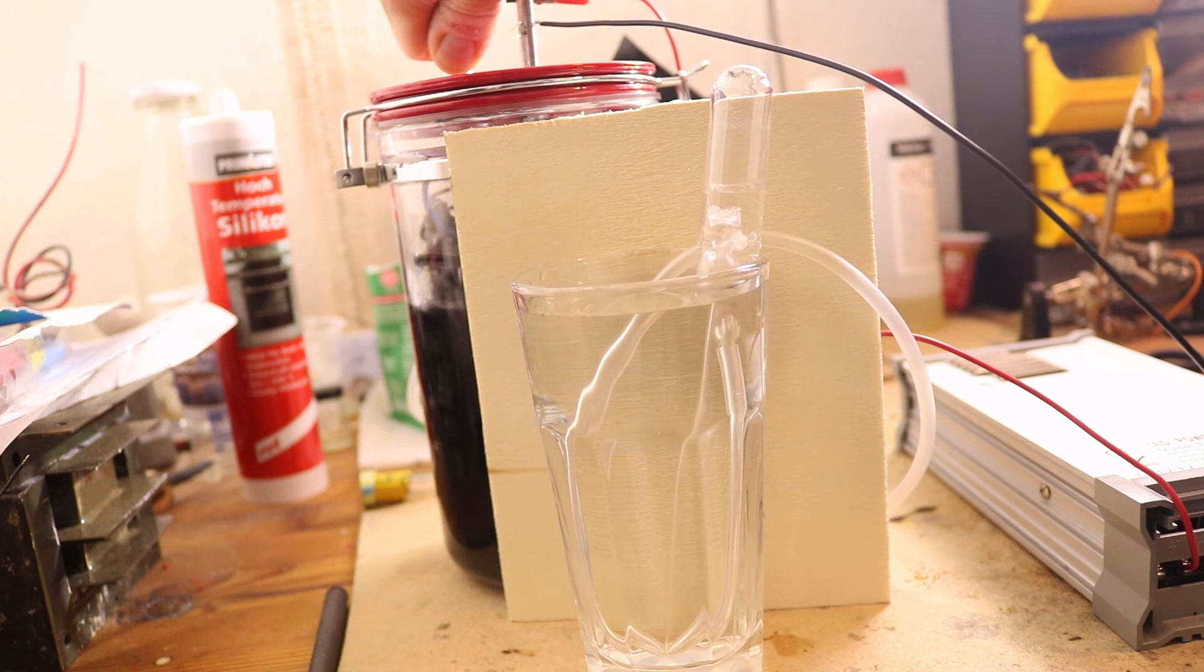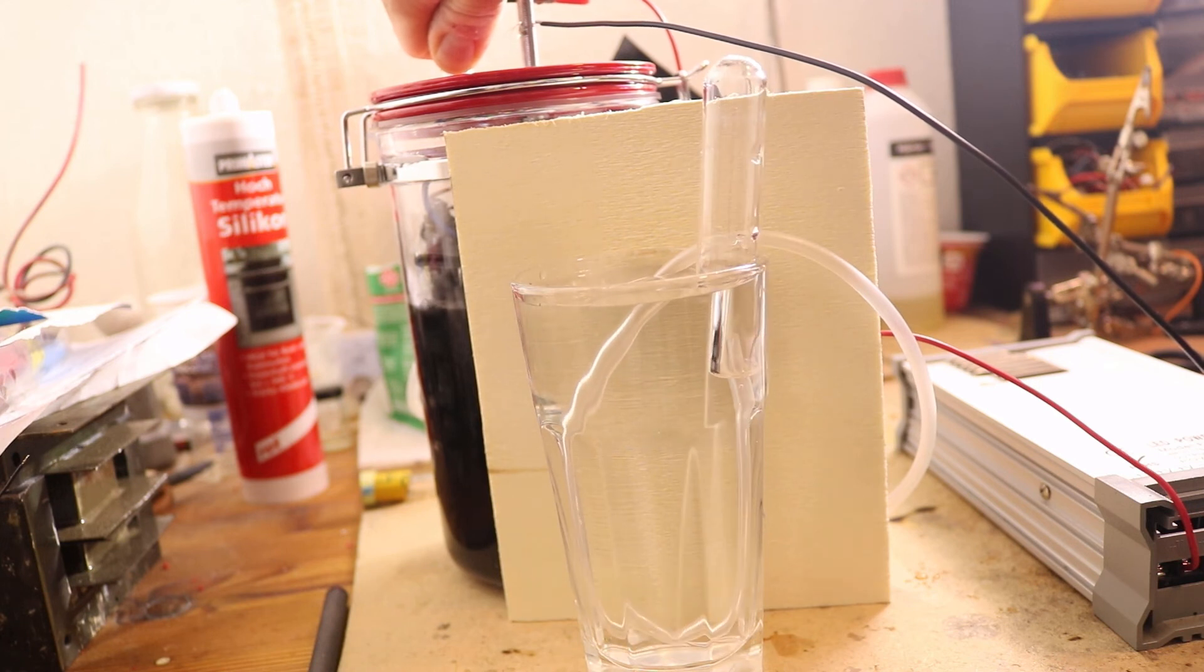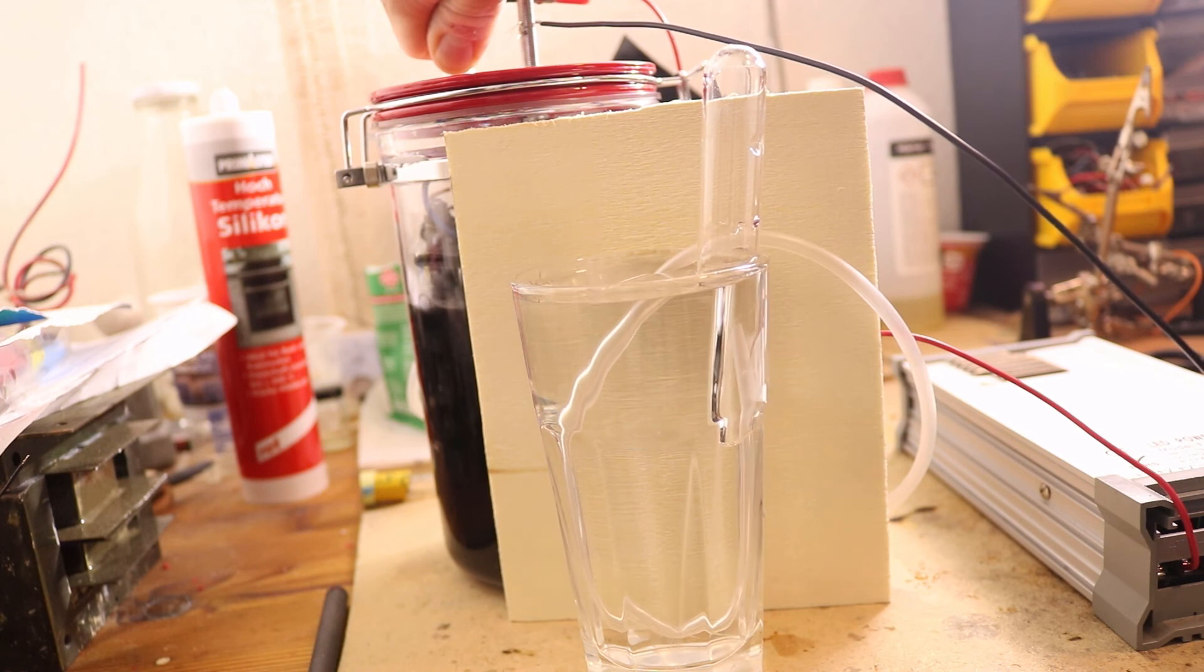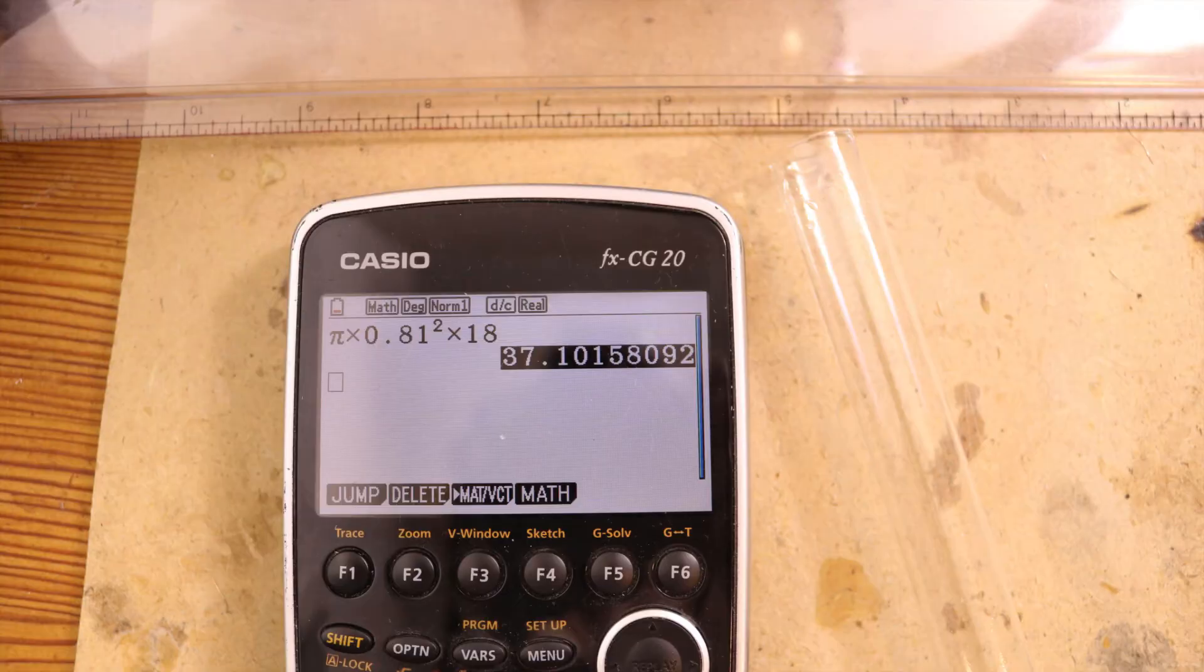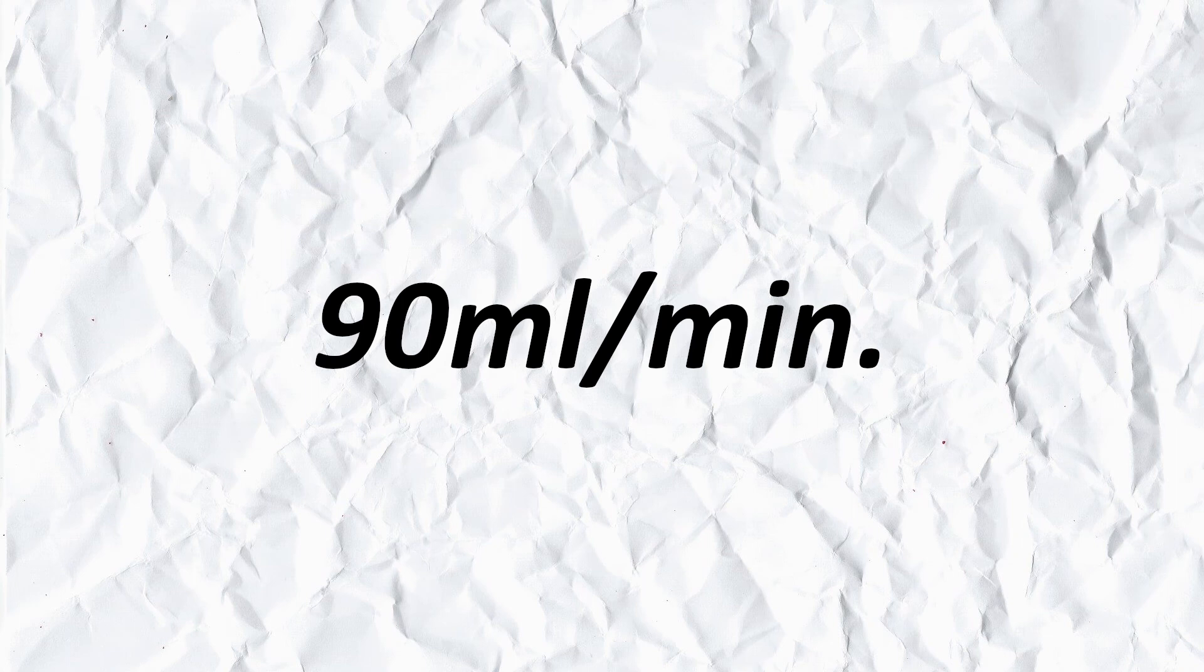To measure how much the generator actually produces I turned a test tube upside down in a glass of water and let the gas bubble in. This took 25 seconds and I calculated with the volume of the test tube that the generator is producing 90 milliliters of gas per minute.